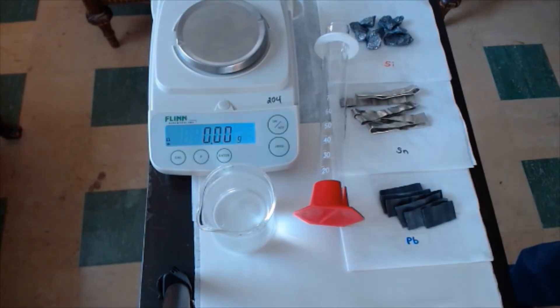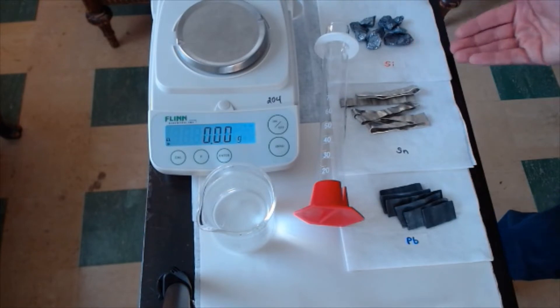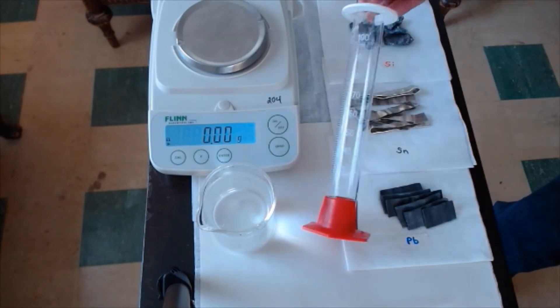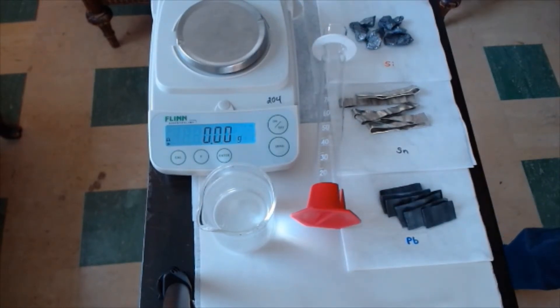Make sure we have everything assembled that we need. We need the samples of our elements. We have silicon, we have some pieces of tin, and we have some pieces of lead. We have a graduated cylinder and we have our electronic balance.